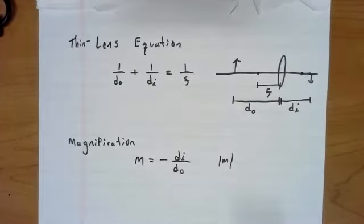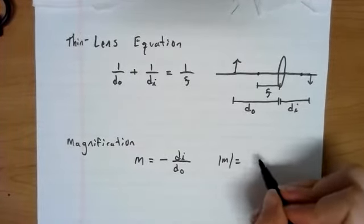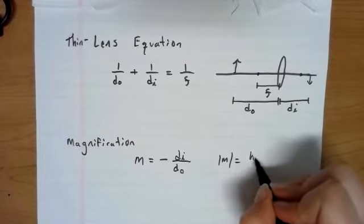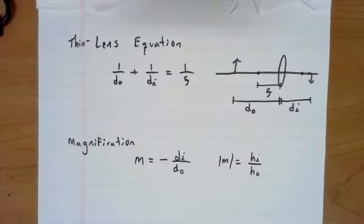We want to take the absolute value of the magnification. Yes, the magnification can be negative. We'll talk about in just a moment what that means. But you can relate the image height to the height of your original object.